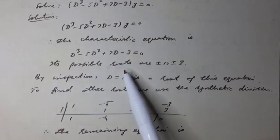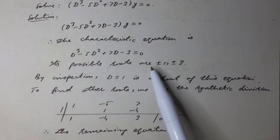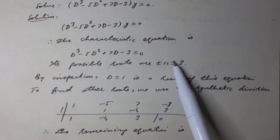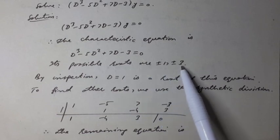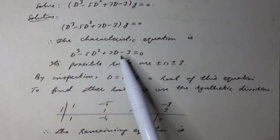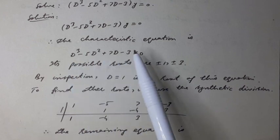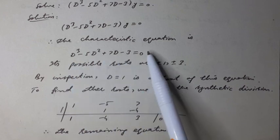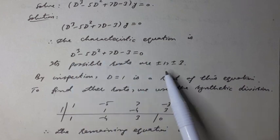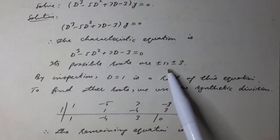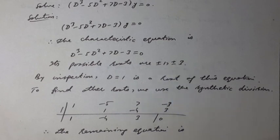Its possible roots are ±1 and ±3, because negative 3 multiplied by 1 equals negative 3. Its divisors are ±1 and ±3. By inspection, we check which values satisfy the equation.